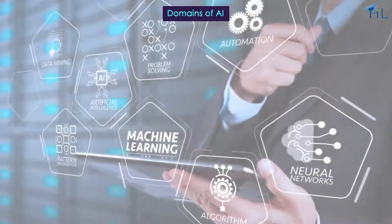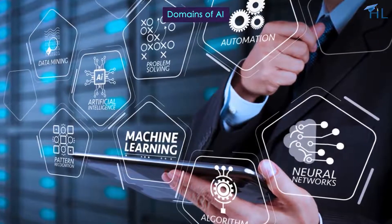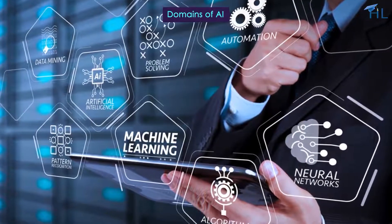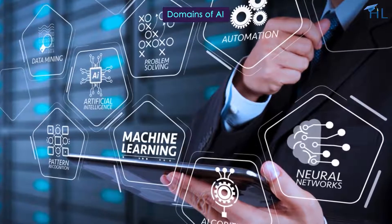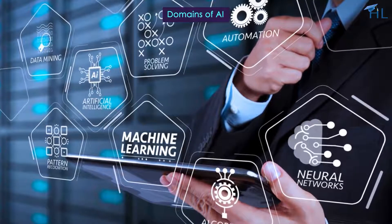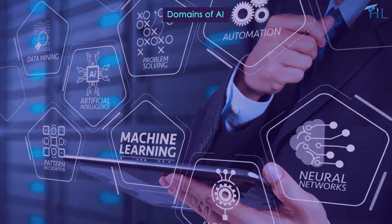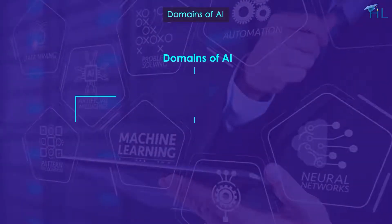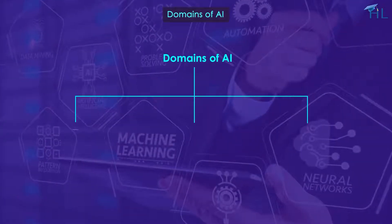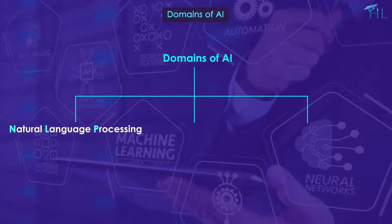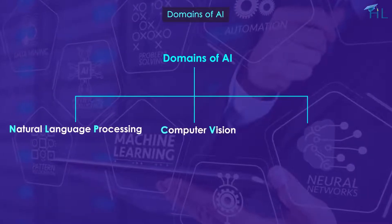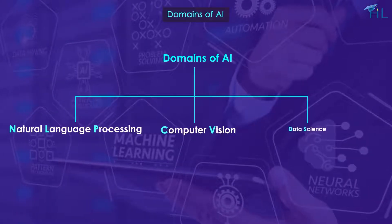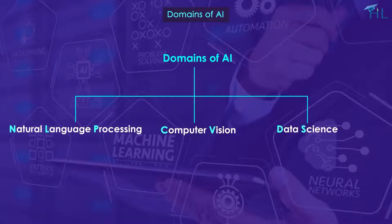The term 'domains of AI' refers to the various specialized areas within artificial intelligence. The three main domains of AI are natural language processing, computer vision, and data science. Let us explore these domains of AI and delve into their subcategories and applications.